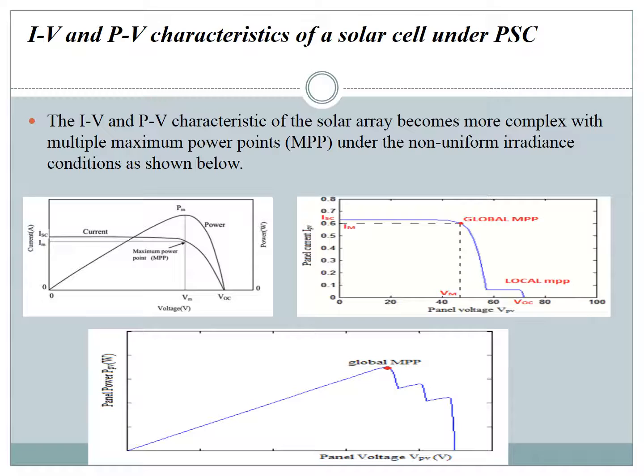Regarding the IV and PV characteristics of the solar cell under partial shading condition: in a photovoltaic system, it is virtually impossible to utterly avoid shading. The IV and PV characteristics of the solar array become more complex with multiple maximum power points under non-uniform irradiance conditions, as shown in the figures. The first figure on the left shows steady irradiation and temperature with just one maximum power point. However, the other two figures on the right show multiple maximum power points due to shading.